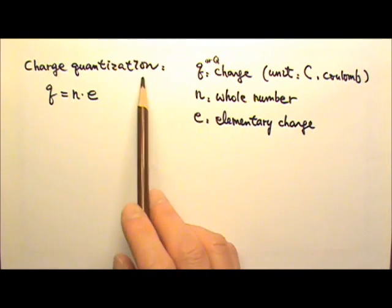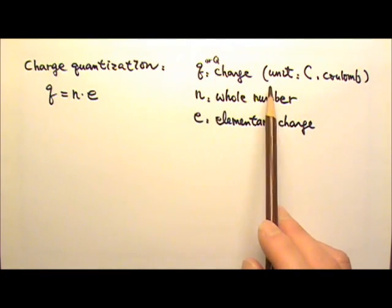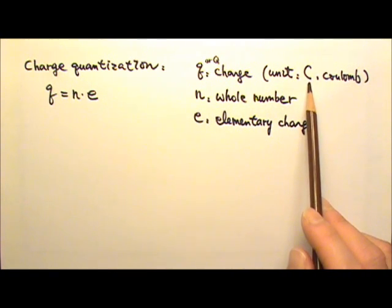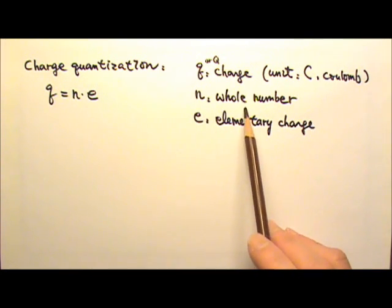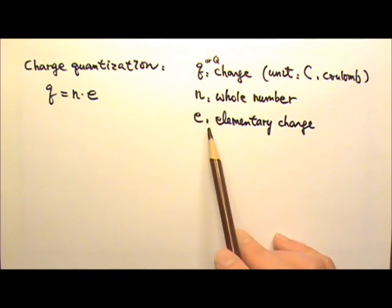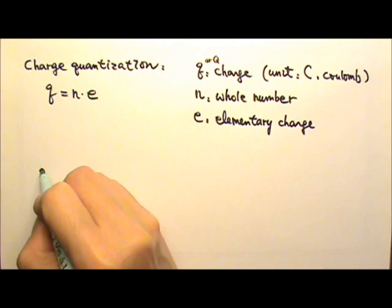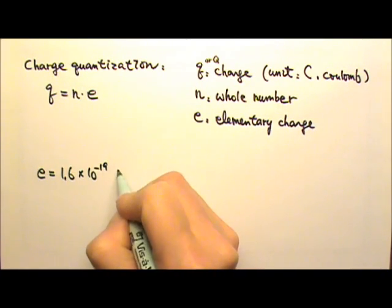This is called charge quantization. We use lowercase or uppercase Q for charges. The standard unit for charge is the capital C, Coulomb, named after French physicist Charles Coulomb whose law we will be studying in this lesson. N is a whole number and the lowercase e is the elementary charge. The elementary charge e is 1.6 times 10 to the negative 19th Coulomb.